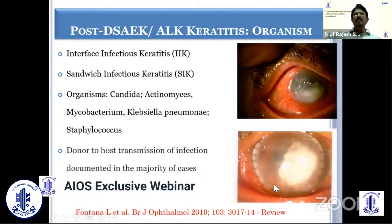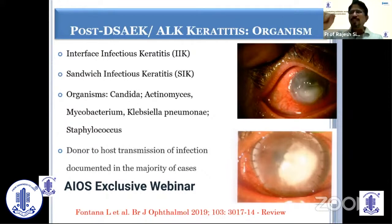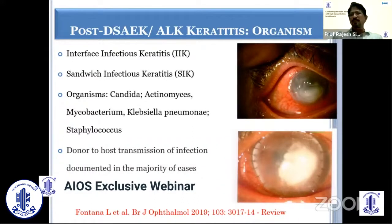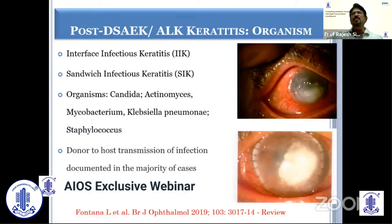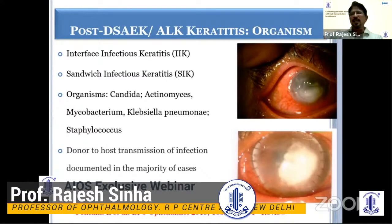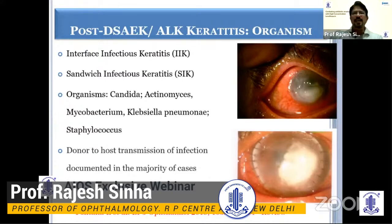Post-lamellar keratoplasty keratitis — such as post-DSAEK or post-anterior lamellar keratoplasty — is also called interface infectious keratitis or sandwich infectious keratitis, because corneal tissue is present on two sides with infiltrate in between. It mostly starts in the interface, beginning from the donor tissue and moving towards the host. A review article by Fontana et al found that in the majority of studies, fungal infection is most common; apart from that, actinomyces, mycobacterium, Klebsiella, and Staph have been found to be causative organisms. Donor-rim culture has given the maximum yield for organism identification.